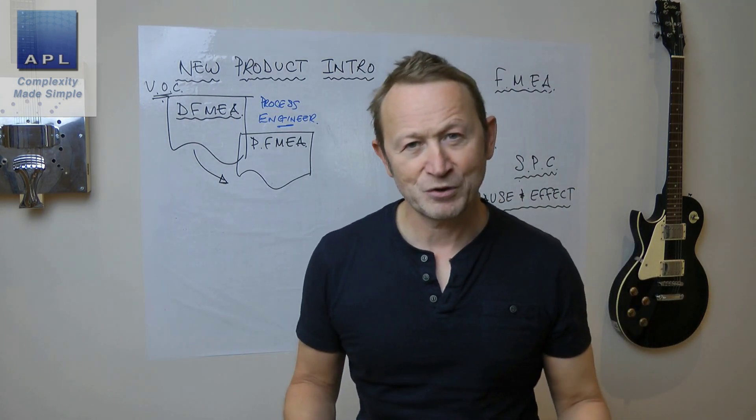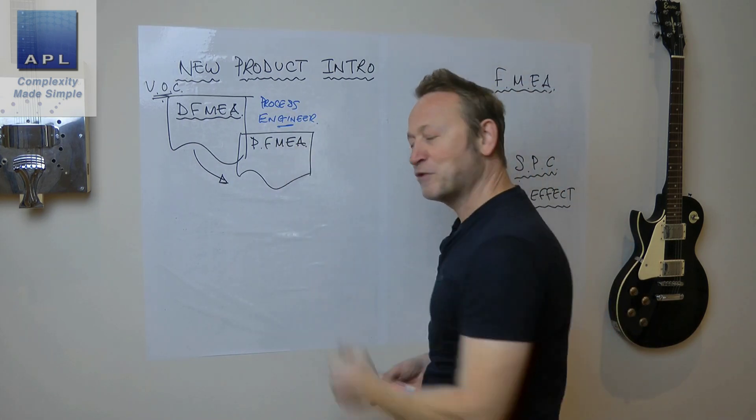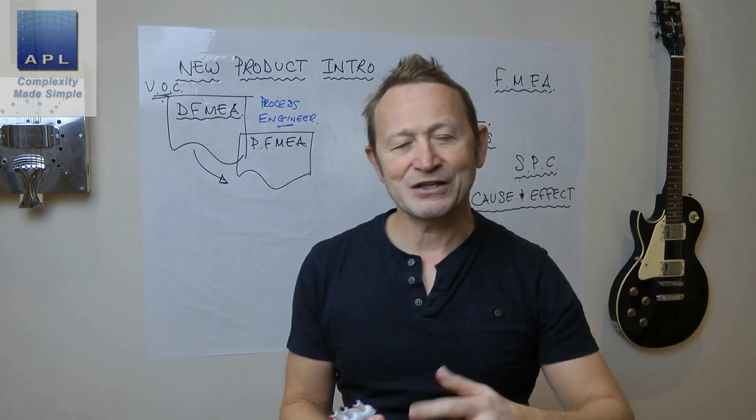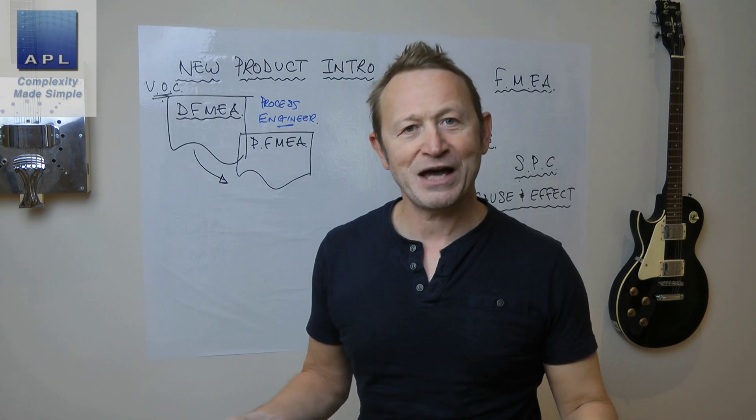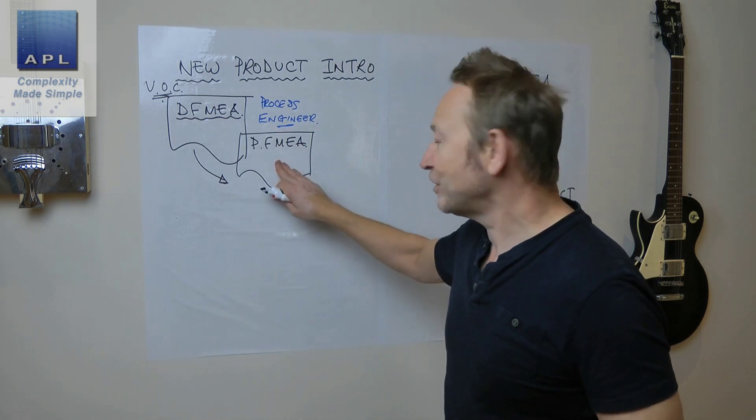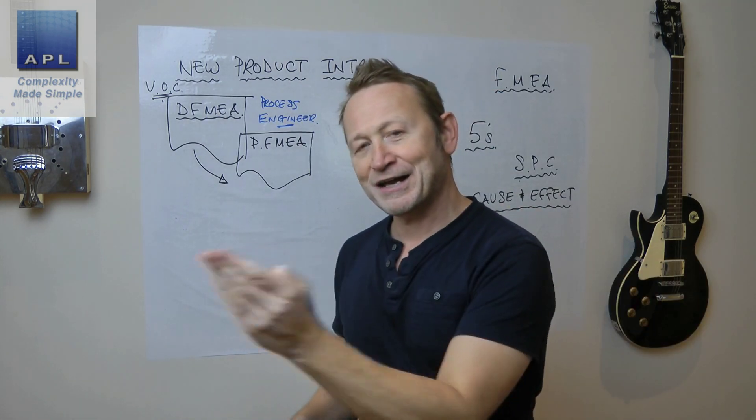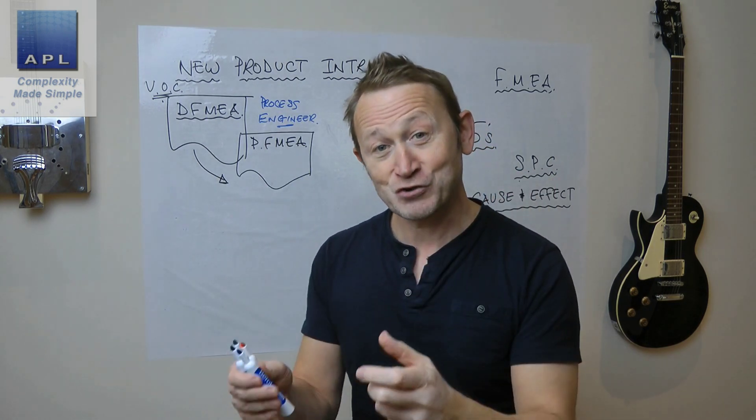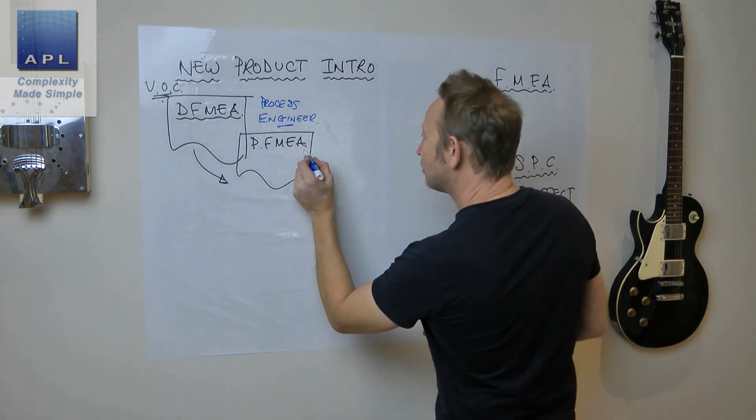The process engineer has to design the process, decide what machine is going to be used and what controls are going to be put in place. How does he do this? With the process FMEA. The process FMEA isn't just a list of extreme events. It's supposed to take you through every step of the process and ask what could go wrong and how you're going to control it.